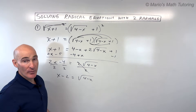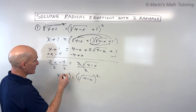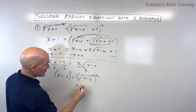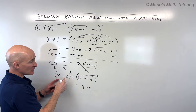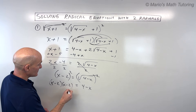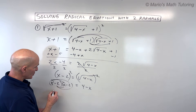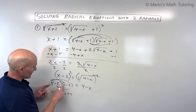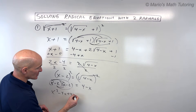We're going to square the left and right sides again. The square and the square root are inverses — those undo each other — so we get four minus x on the right. Don't make the mistake of just writing x squared minus four. Think of it as x minus two times x minus two, then FOIL it out. That gives us x squared minus four x plus four, since negative two times negative two is positive four.